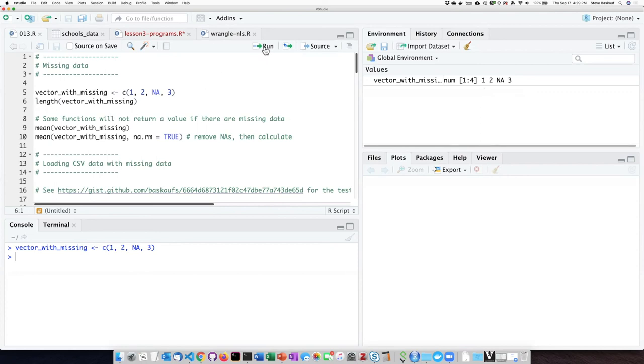If we ask how long the vector is, in other words, how many items are there, it says four. So the NA value is considered to be one of the values. It just is an unknown value.